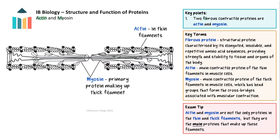Actin and myosin are fibrous proteins found in muscle cells, which are essential for muscle contraction. Actin helps form thin filaments and has binding sites for myosin. Myosin is a large elongated protein, which is the main protein of the thick filaments in muscle. Its globular heads interact with actin filaments to create cross bridges, and use energy from ATP to undergo conformational changes that pull the actin filaments closer together, resulting in muscle contraction.